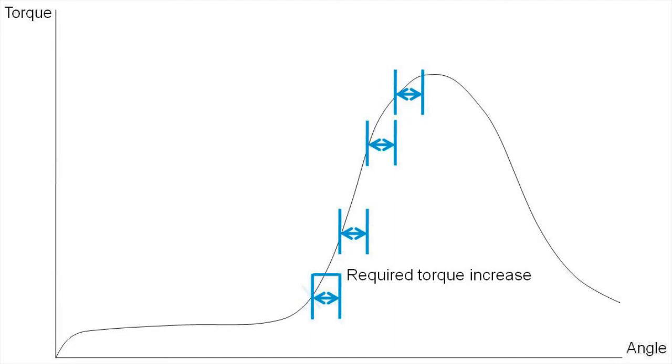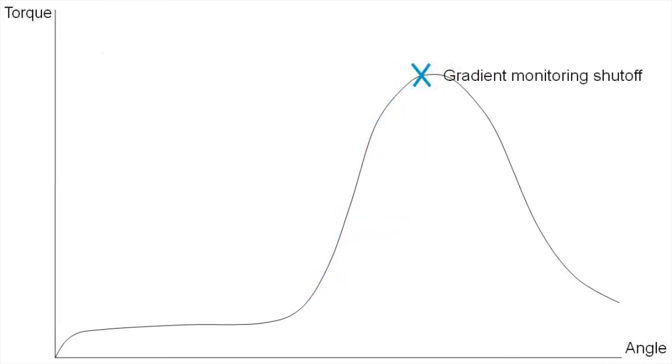Set a gradient torque minimum and maximum limit. In this example, the minimum limit is used to identify the yield point. If the increase in torque over a joint interval is not within the gradient torque min and max limits, the fastening will be aborted with a not-okay result.